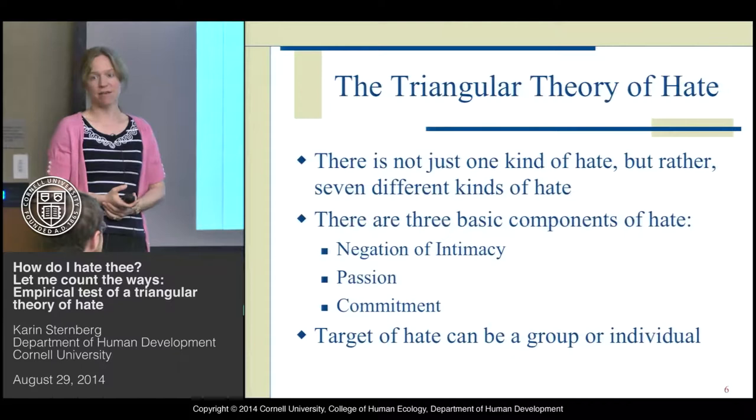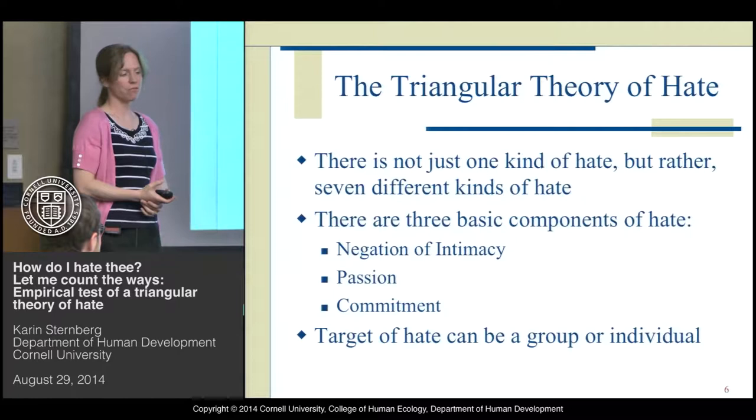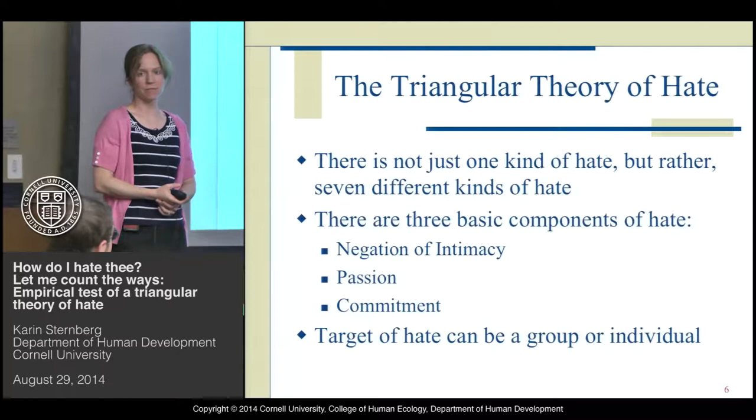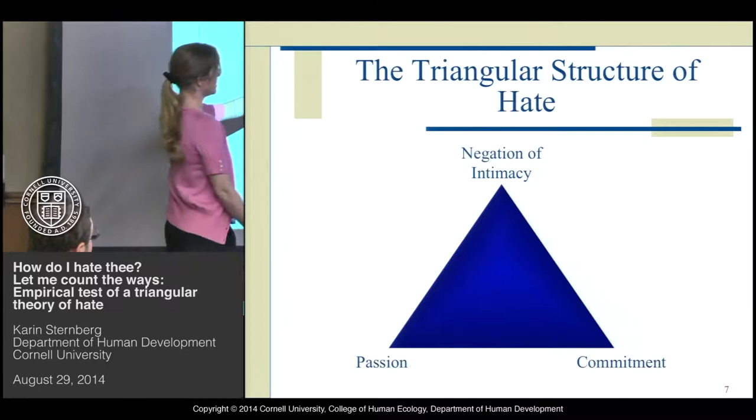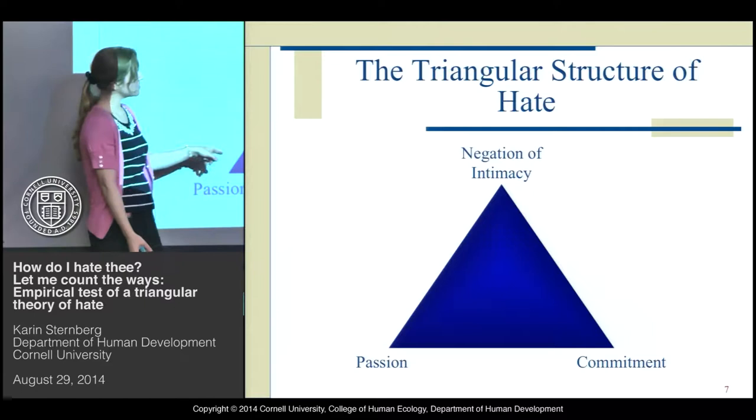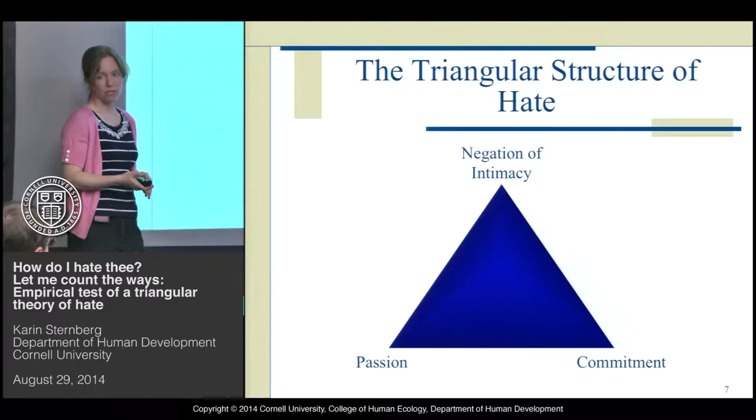The triangular theory of hate says that there is not just one overarching kind of hate, but that there are actually seven different kinds of hate. These are made up of three different components: negation of intimacy, passion, and commitment. The target of hate can be a group or a person, and the structure can change depending on how much of each component is present.